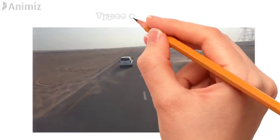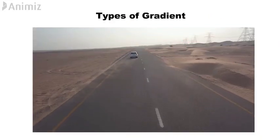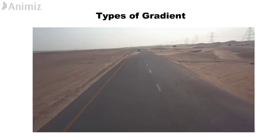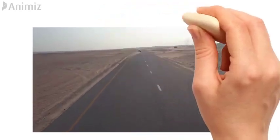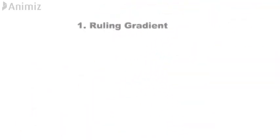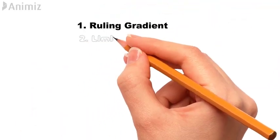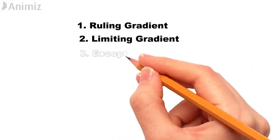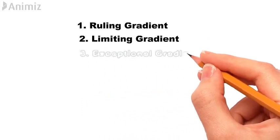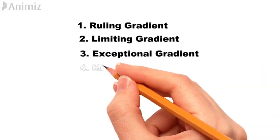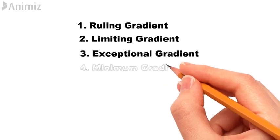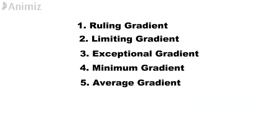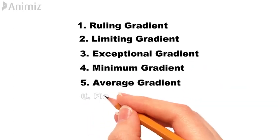Six types of classification of gradient. The gradient is divided into the following six categories: ruling gradient, limiting gradient, exceptional gradient, minimum gradient, average gradient, and floating gradient.